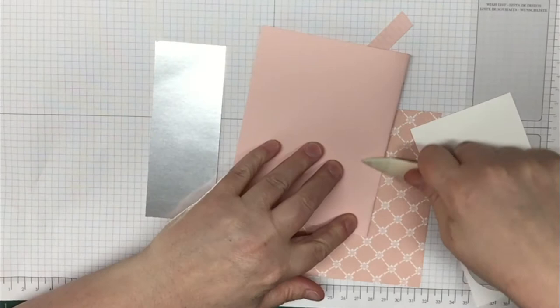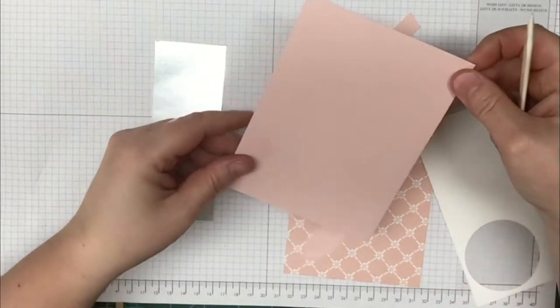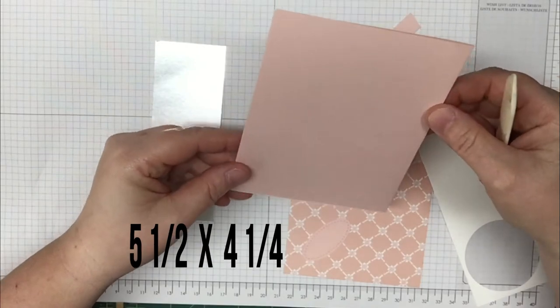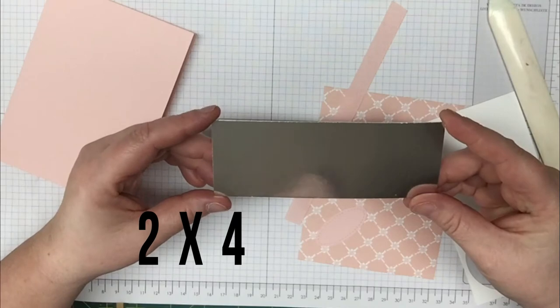You're going to need a piece of powder pink paper. This is A2 size, cut at 5.5 by 4.25 inches. You're also going to need a piece of silver foil, cut at 2 by 4 inches.